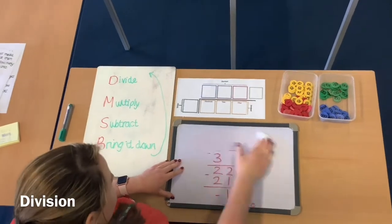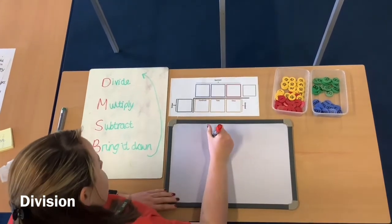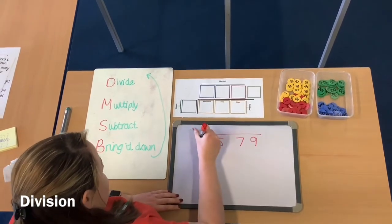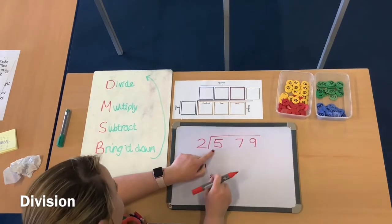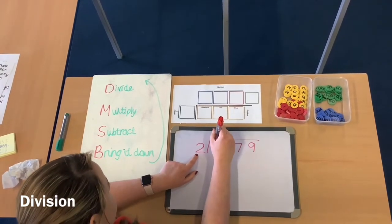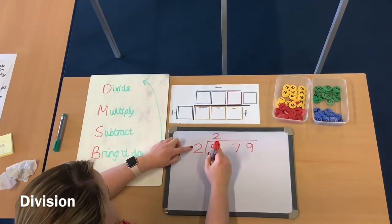Right. Final question I'm going to model for you today, before you guys have a go. It's 579 divided by 2. So starting from my hundreds again, 5 divided by 2 is 2. Next step, multiply 2 times 2 is 4.